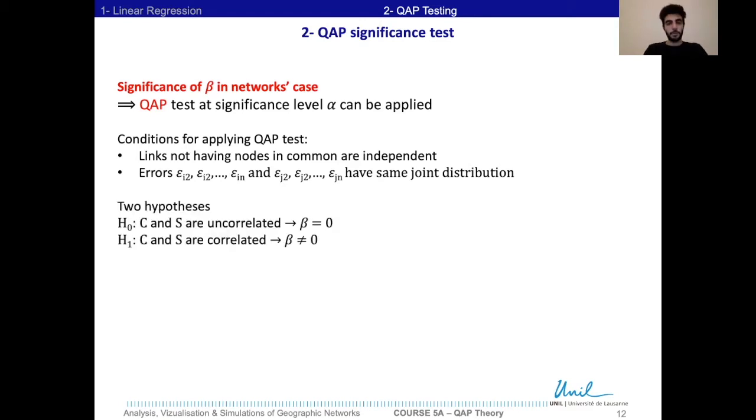Here again we have two hypotheses: the hypothesis H0 stating that C and S are uncorrelated, meaning that beta is equal to 0, C and S being the link structure of the layers S and C, and then the alternative hypothesis stating that C and S are uncorrelated. And then, as in every test, we reject H0 if the p-value is less than alpha. The question here is how to calculate the p-value for the QAP test.